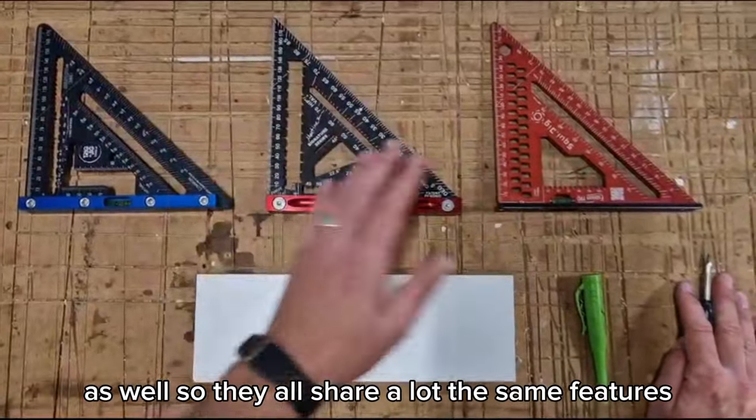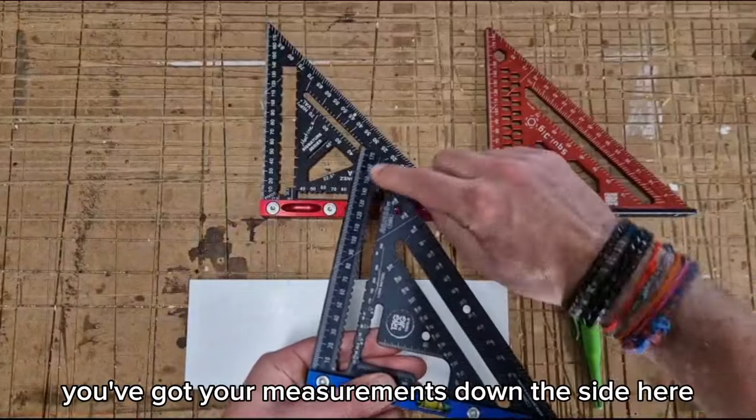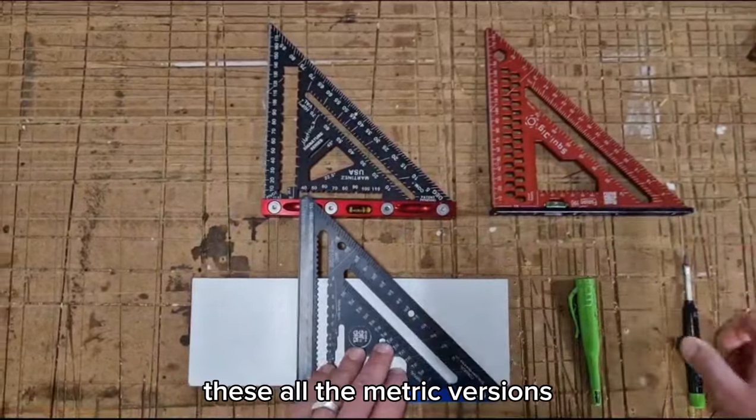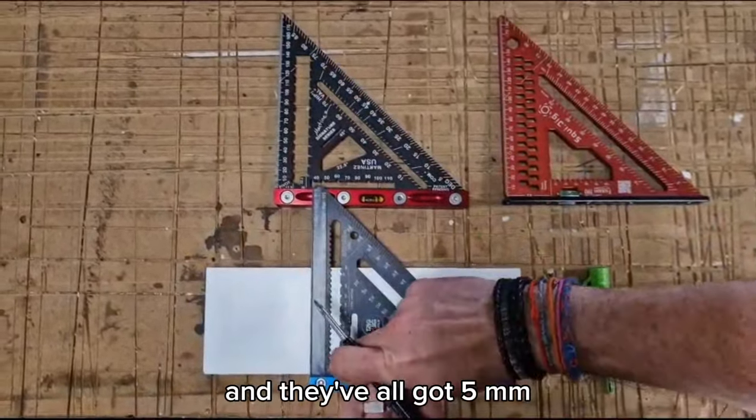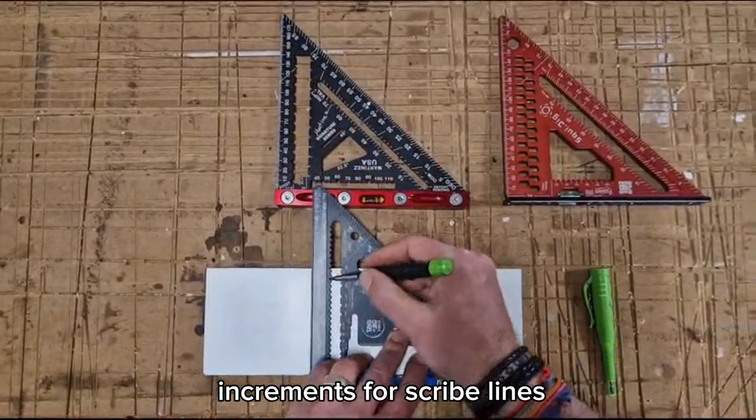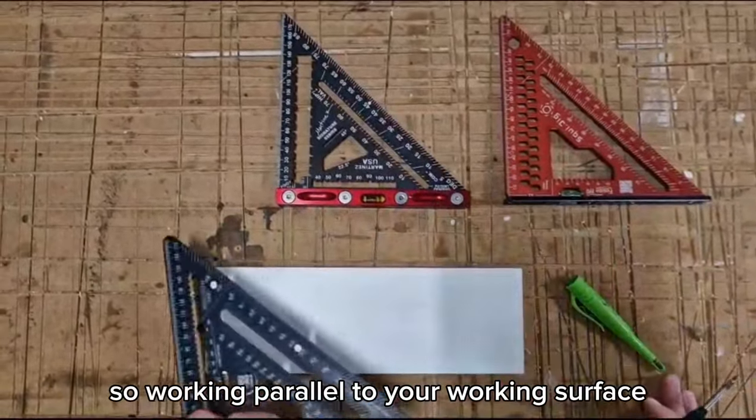So they all share a lot of the same features. First up you've got your measurements down the side here. These are all the metric versions and they've all got 5 mil increments for scribe lines, so working parallel to your working surface.